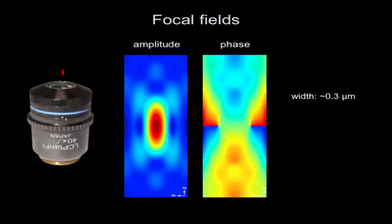The width of such a field is about 0.3 microns - 300 nanometers or so - and the length is about a micron. Keep those numbers in mind, because those are the spatial dimensions we will be dealing with.